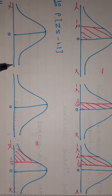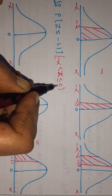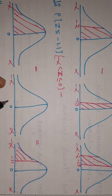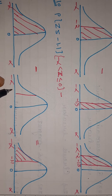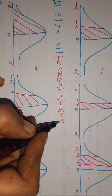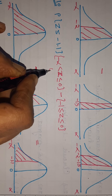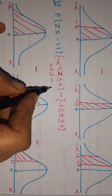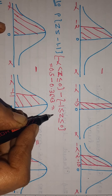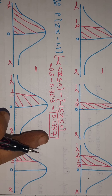So the calculation is: 0.5 minus the area from minus 1.1 to 0, which is 0.3643. Therefore the required area is 0.5 − 0.3643 = 0.1357. This is the area for Z ≤ minus 1.1.